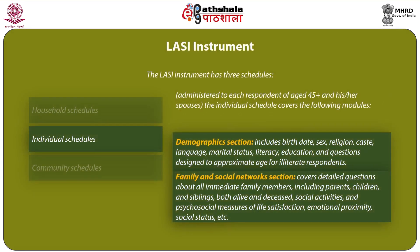The second schedule is the individual schedule, administered to each respondent aged 45 and above and their spouses. It covers a demographic section (birth date, sex, religion, caste, language, marital status, literacy, education, and questions to approximate age for illiterate respondents), and a family and social network section covering detailed questions about immediate family members including parents, children and siblings both alive and deceased, social activities, psychological measures of life satisfaction, emotional proximity, social status and others.